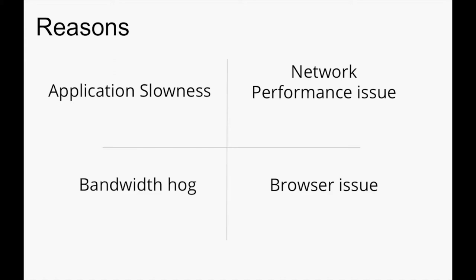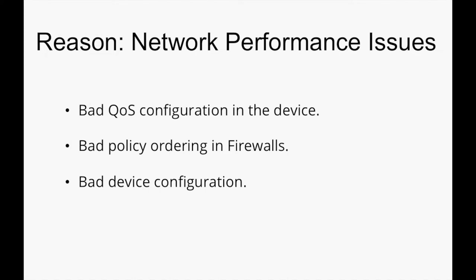The main reasons for slowness can be application slowness, network performance issues, bandwidth hogs, or browser issues. Network performance issues can be caused by bad QoS configuration on a device, bad policy ordering in firewalls, or bad device configuration. Even a bad QoS configuration on a device is going to affect bandwidth and create network-related issues for a website company.